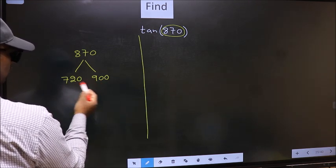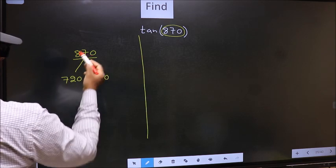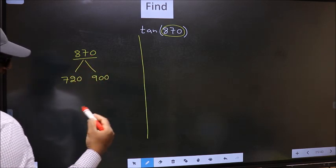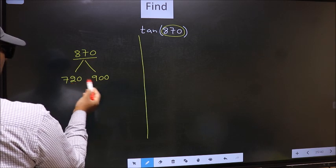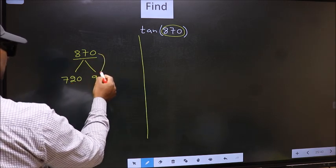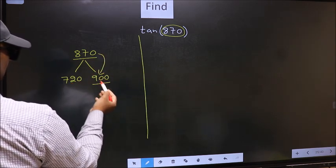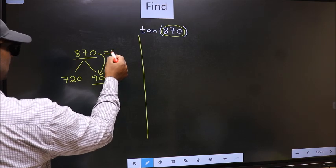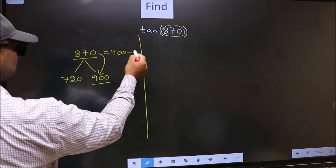Between these two numbers, 870 lies. Next, 870 is close to which number? This is close to 900. So 870 should now be written as 900-30.